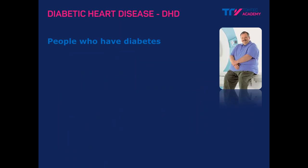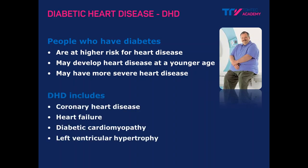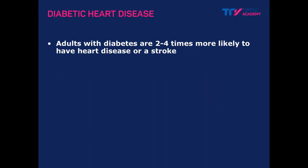Now let's come to the topic of today — diabetic heart disease — and what it means for patients. People with diabetes are at much higher risk for heart disease, which they develop at a younger age and in a more severe form. This includes coronary artery disease, heart failure, cardiomyopathy, hypertrophy of the left ventricle, and so on. This group of patients has a two to four times higher likelihood of heart disease or stroke.